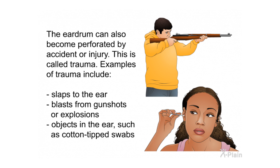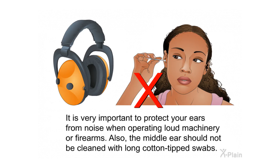The eardrum can also become perforated by accident or injury — this is called trauma. Examples of trauma include slaps to the ear, blasts from gunshots or explosions, and objects in the ear such as cotton-tipped swabs. It is very important to protect your ears from noise when operating loud machinery or firearms, and the middle ear should not be cleaned with long cotton-tipped swabs.